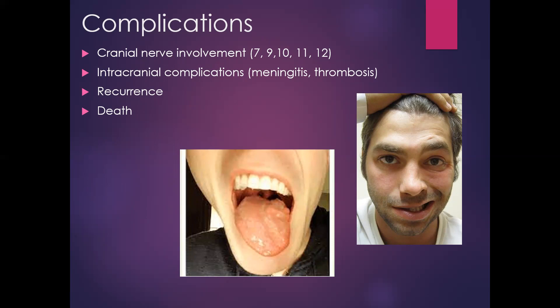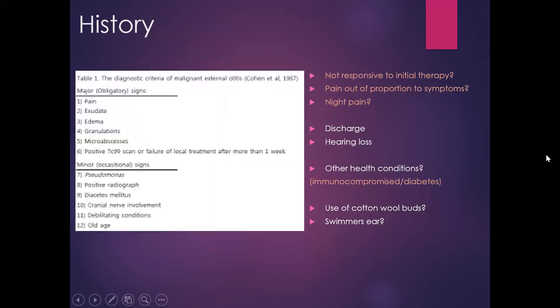Things to look for in the history: the main features pointing towards a diagnosis include being non-responsive to initial therapy — patients in their second or third week of treatment for otitis externa that's just not getting better, having had several courses of topical antibiotic and steroid drops. Also if pain is out of proportion to the clinical findings. However, some patients with confirmed necrotizing otitis externa have tolerated the pain very well and weren't in much discomfort, so it's all relative.